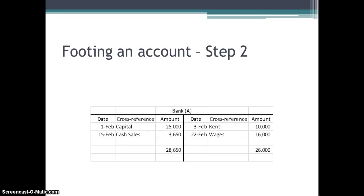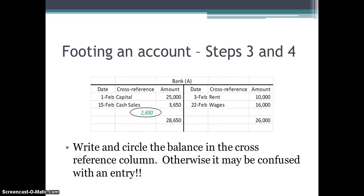Step 3 requires us to deduct the smaller total from the larger total, so we subtract our $26,000 of credits from our $28,650 of debits. Combining steps 3 and 4: $28,650 minus $26,000 gives us $2,650, and we write that balance on the larger side of the ledger. This tells us the bank balance is a $2,650 debit balance.